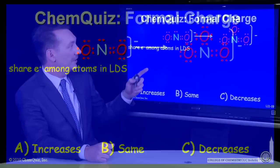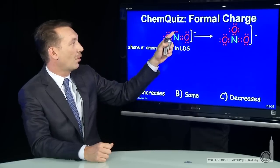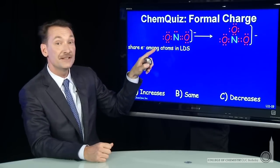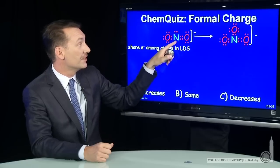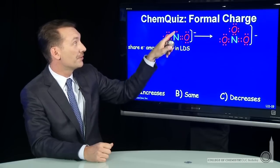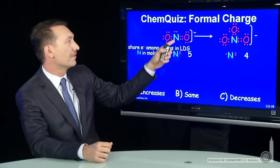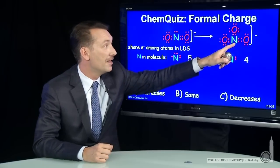In this molecule, nitrogen has one, two electrons that it doesn't have to share. And then it'll share one of these and two of those. So one, two, three, four, five electrons in a sharing mode for nitrogen in that molecule.